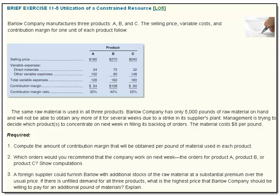The material cost is $8 per pound. Requirement one says: compute the amount of contribution margin that will be obtained per pound of material used in each product.